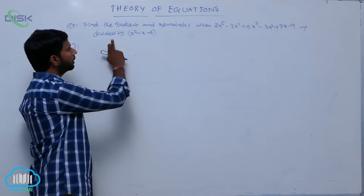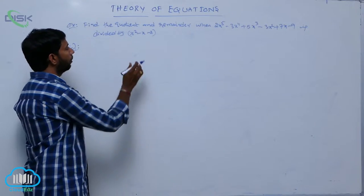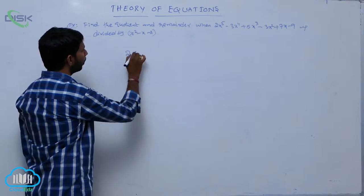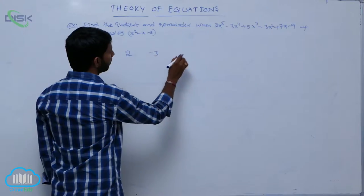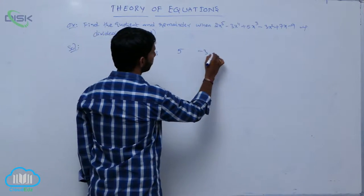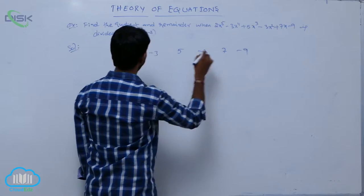First, write the coefficients of the given polynomial. It is 2 minus 3, 5 minus 3, 7 minus 9.